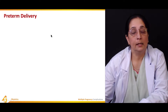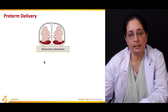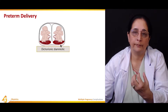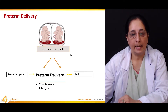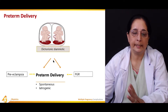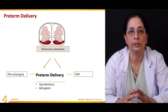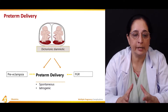A very common complication of multiple pregnancy is preterm delivery. In a dichorionic diamniotic pregnancy, there are two chorions, two placentas, and two amniotic sacs. This type of twin pregnancy can lead to preeclampsia and fetal growth restriction, both of which can cause preterm delivery.